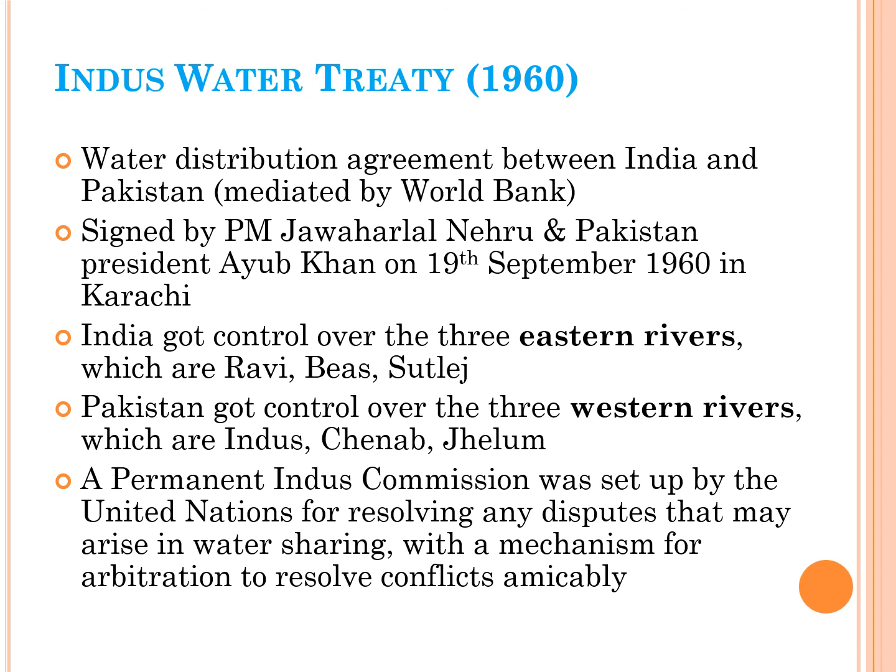The Indus Water Treaty is a water distribution agreement signed between India and Pakistan on 19th September 1960 in Karachi, by Indian Prime Minister Jawaharlal Nehru and Pakistan's President Ayub Khan. This treaty was mediated by the World Bank. The treaty divides the Indus river and its tributaries into two groups — Eastern rivers and Western rivers. India got control over the three Eastern rivers: Ravi, Beas and Sutlej, with 80% control for India and 20% for Pakistan. For Western rivers — Indus, Chinab and Jhelam — Pakistan has 80% share and India has 20%. A permanent Indus Commission was set up by the United Nations for resolving any disputes in water sharing, with a mechanism for arbitration to resolve conflicts amicably.